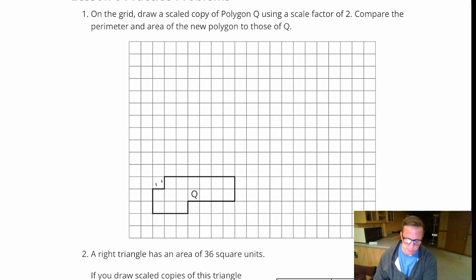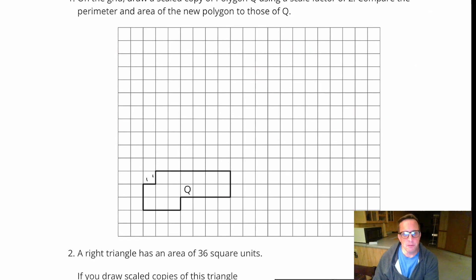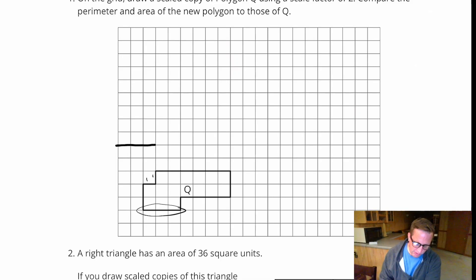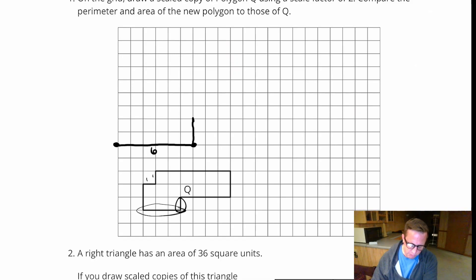Everything is being multiplied by 2, so every corresponding side is going to be double what it was before. I'm going to start right here. Do the bottom of it — that side is 3, so it becomes 6: 1, 2, 3, 4, 5, 6. Right there. That becomes 2 because it was 1. This side is 1, 2, 3, 4, so that's going to become 8.